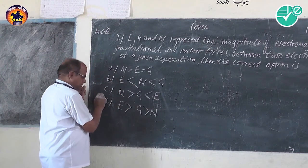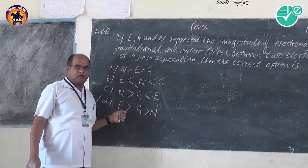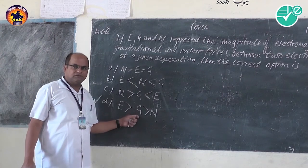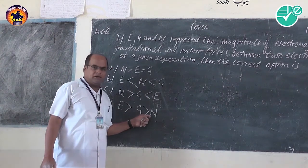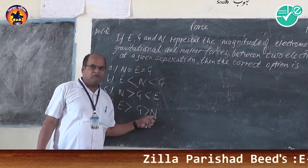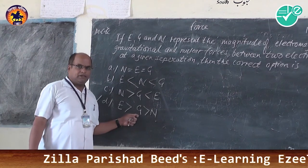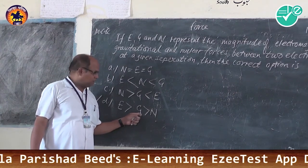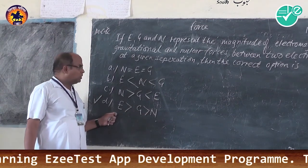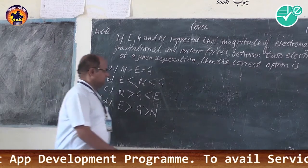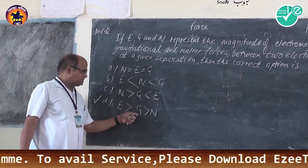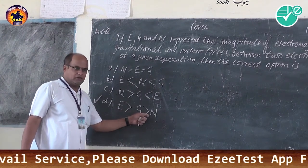The correct option is D. Electromagnetic force is greater than gravitational force, which is greater than weak nuclear force. This means weak nuclear force is the weakest, then gravitational force is stronger than nuclear force, and electromagnetic force is the strongest. The correct option is D: electromagnetic force is greater than gravitational force is greater than nuclear force.